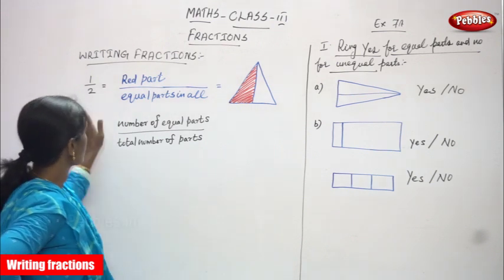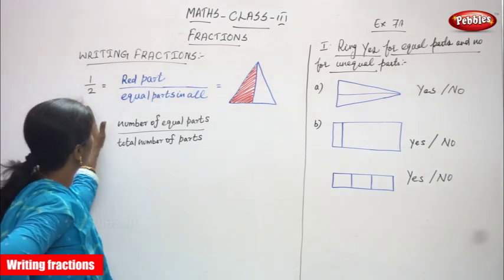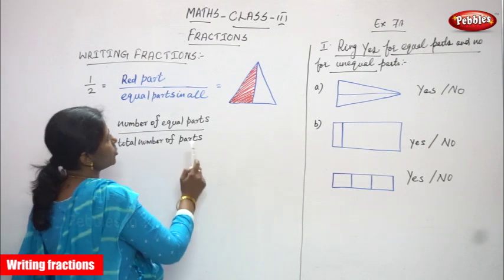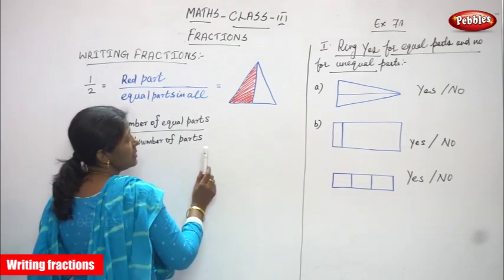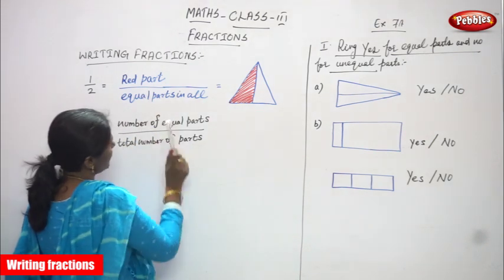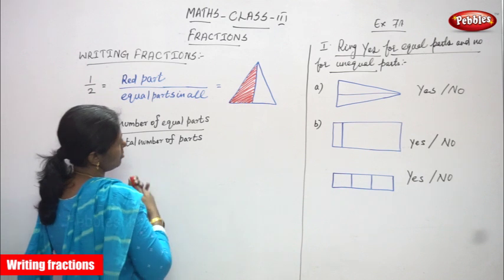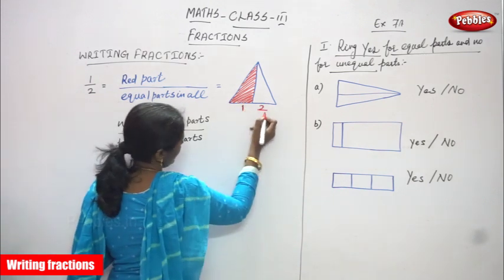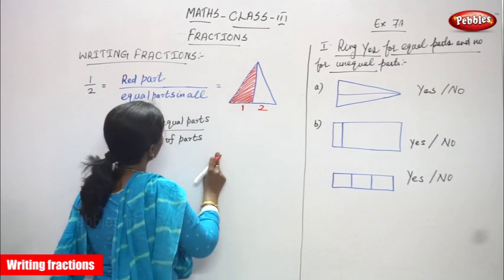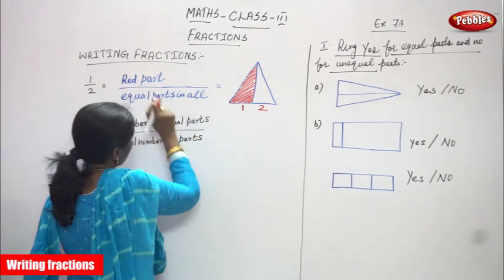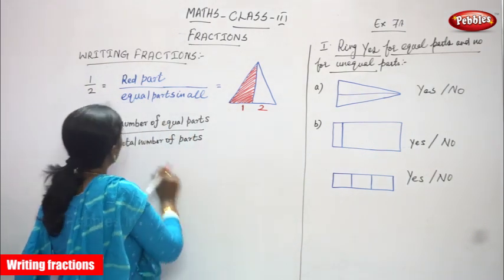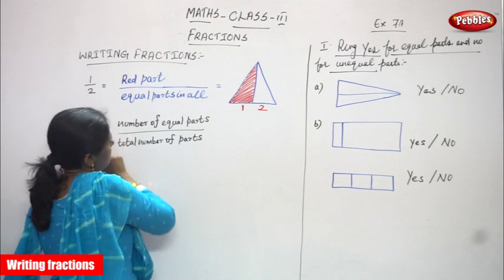Writing fraction — this is 1 by 2. This is a triangle. I cut it into 2 equal parts. The red part is one part, and equal parts in all is 2 — that is first part and second part. This first part only I shaded in red color. So, red part is only one part and equal parts is 2. That is what 1 by 2 I've written.